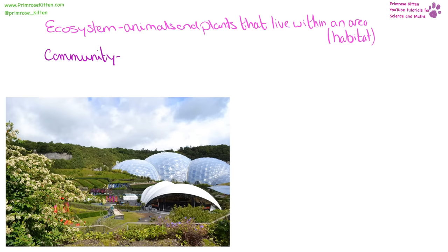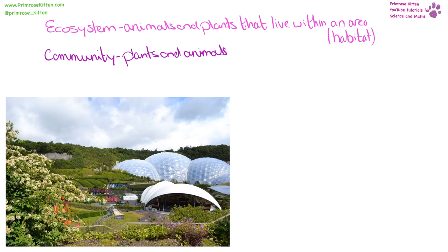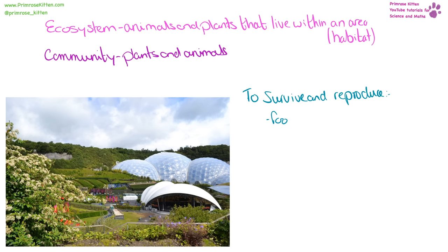An ecosystem is the animals, plants, and everything living within a certain area. The community are the plants and animals that live there, and they are all dependent upon one another — they cannot survive without each other. For example, the animals eat the plants and they can't survive without doing that, and the plants rely on the animals to distribute their seeds. To survive and reproduce, a species needs food, water, air, and sometimes but not always a mate.